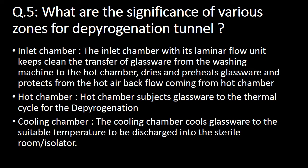Fifth important question: what is the significance of various zones of the depyrogenation tunnel? The first zone is the inlet chamber. The inlet chamber with its laminar flow unit keeps clean the transfer of glassware from the washing machine to the hot chamber. It dries and preheats glassware and protects from the hot air coming back from the hot chamber. The next zone is the hot chamber, which subjects glassware to the thermal cycle for depyrogenation. The third zone is the cooling chamber, which cools the glassware to a suitable temperature to be discharged into the sterile room or isolator.